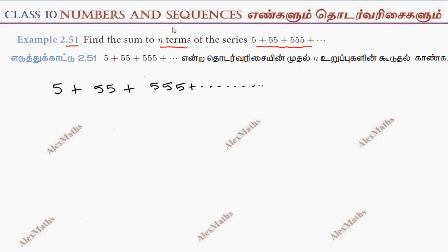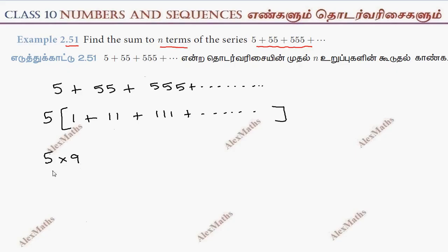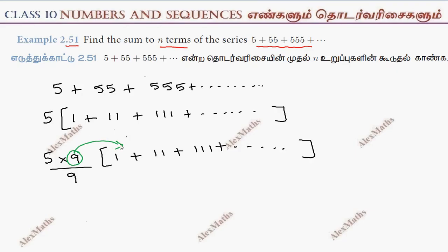In this series, we have a special series — not AP or GP directly. So if we multiply by 5 and divide by 9, we get 5 by 9 times the series 1 plus 11 plus 111 plus dot dot dot.